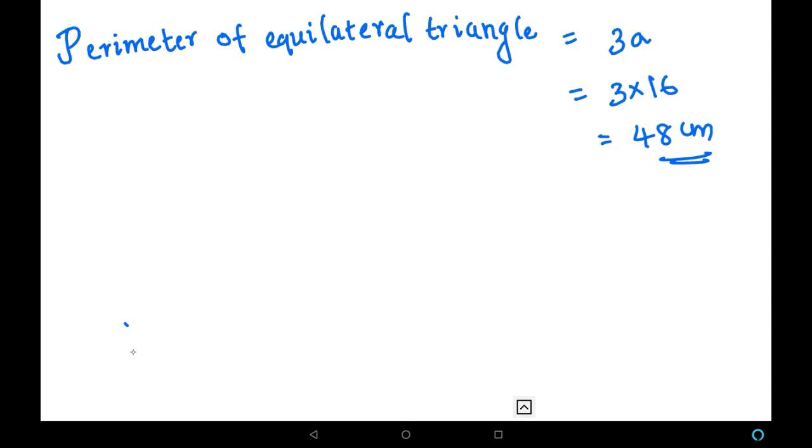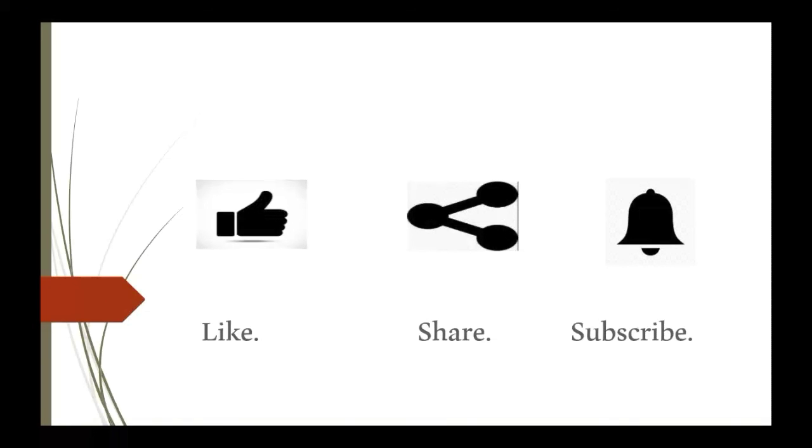We can conclude this problem: each side of the triangle is 16 centimeters, and the perimeter of this equilateral triangle is 48 centimeters. That's it. If you like my video, please like, share, and subscribe. Thank you.